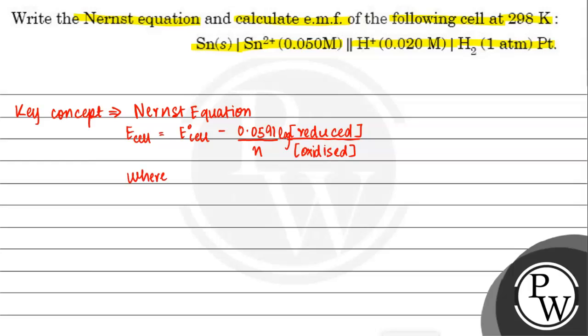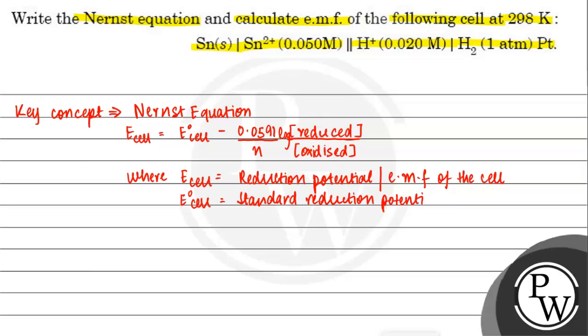Where E_cell is reduction potential, we can say EMF of the cell. E0_cell is standard reduction potential, and N is number of electrons in the reaction. So this is our key concept.